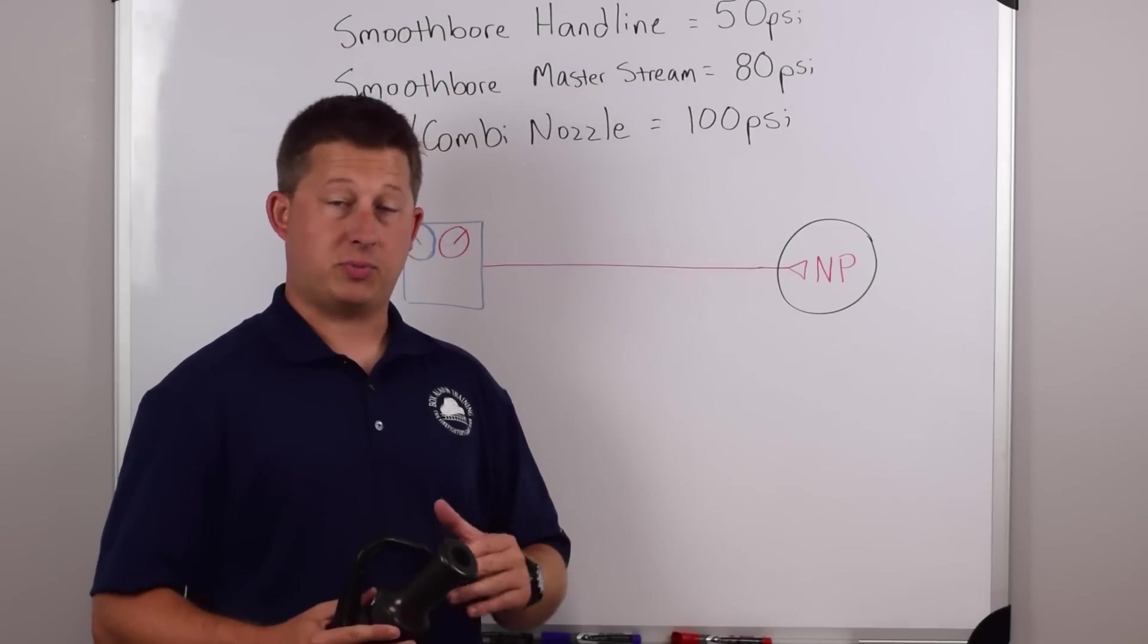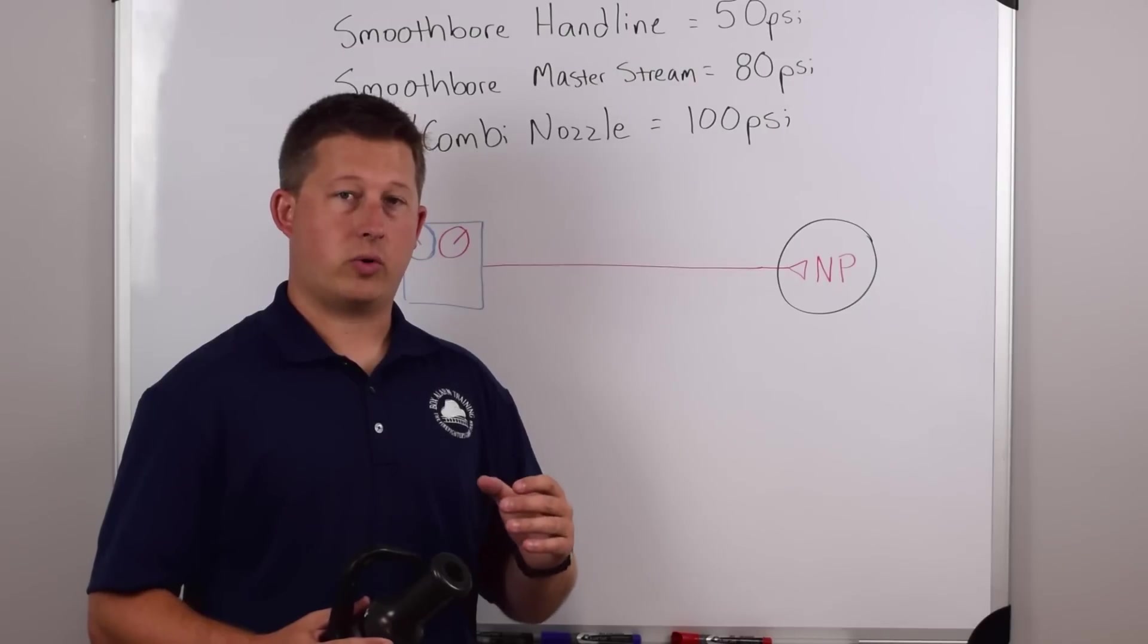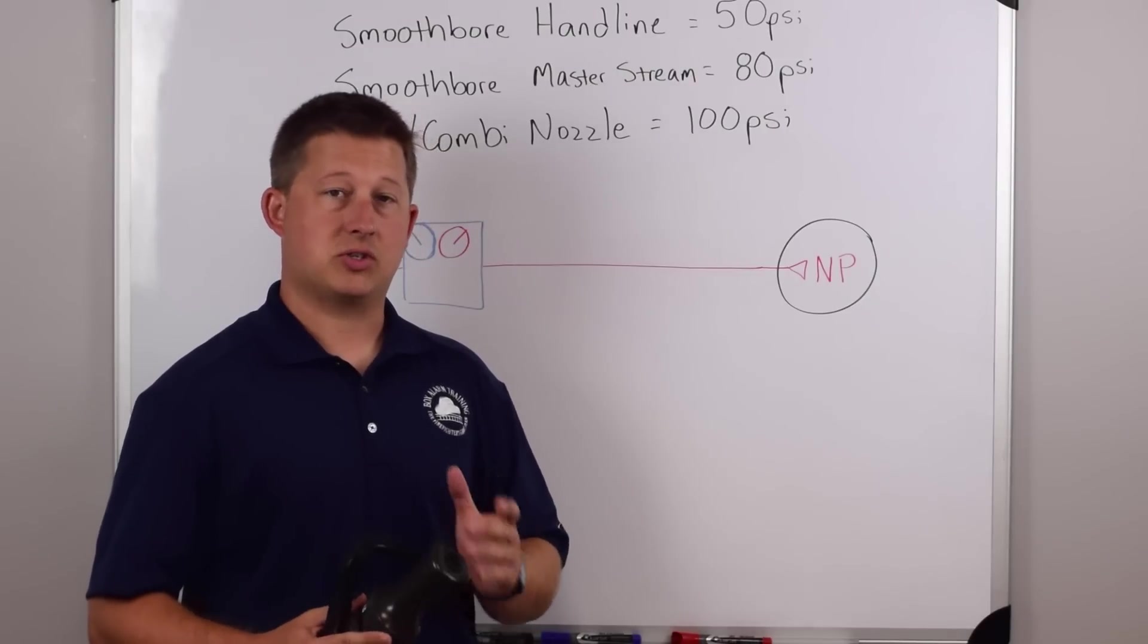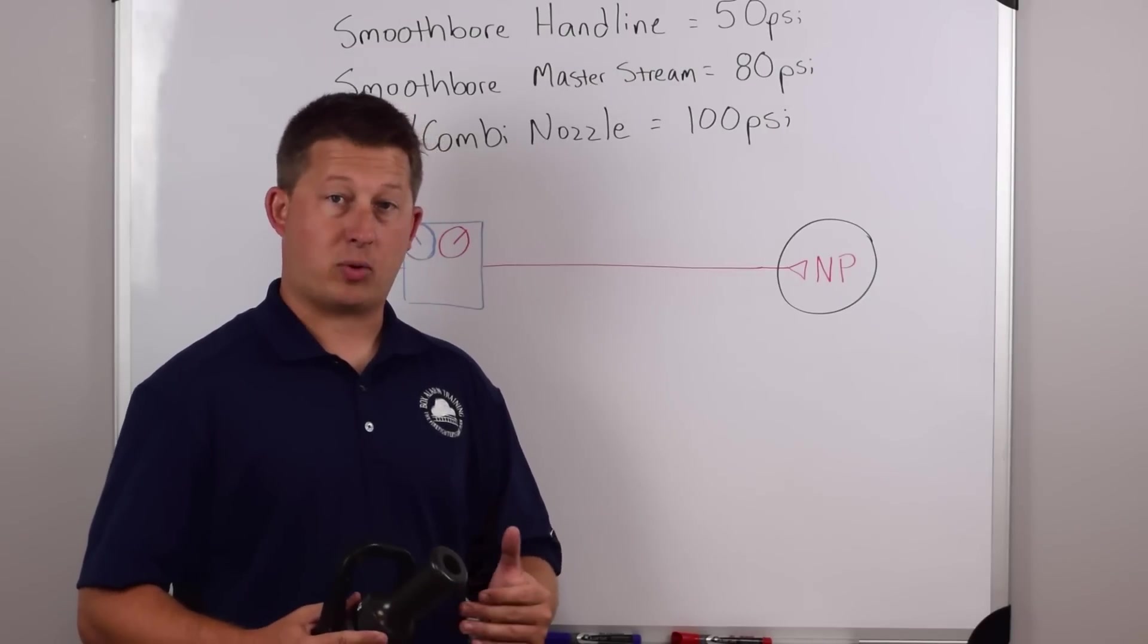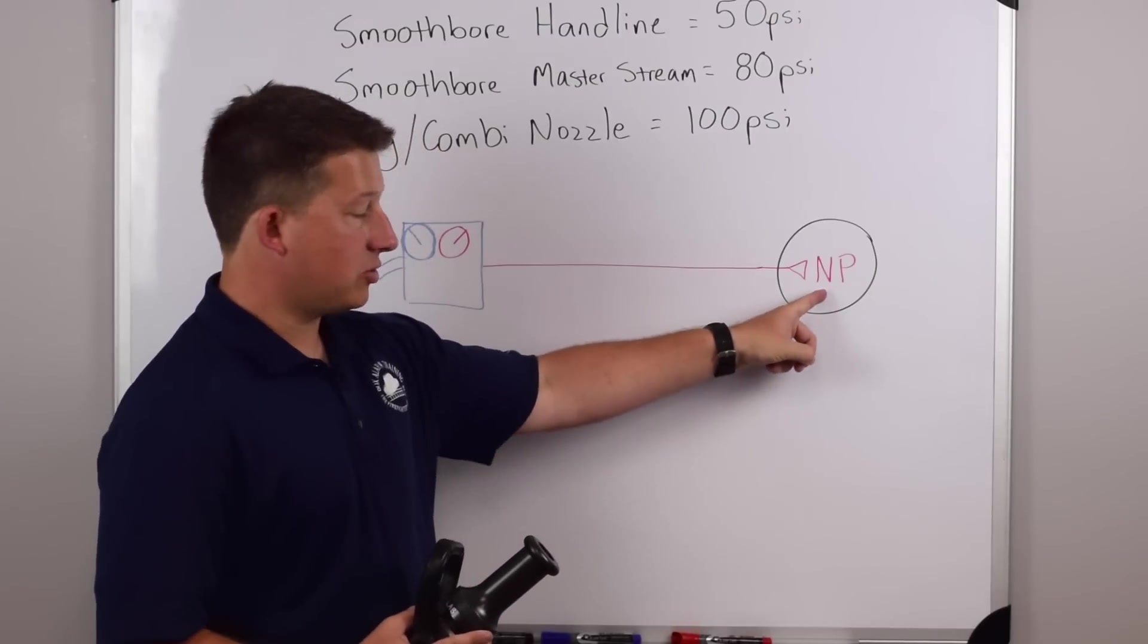That's a personal preference, but for textbook reasons and a lot of times for our test, we're going to use 50 PSI, the standard smoothbore hand line operating pressure. If you do not get 50 PSI to the nozzle, which is nozzle pressure, then you're not going to get the correct flow.